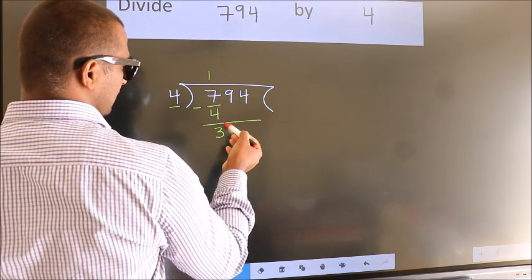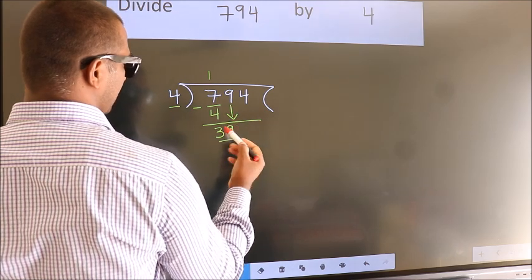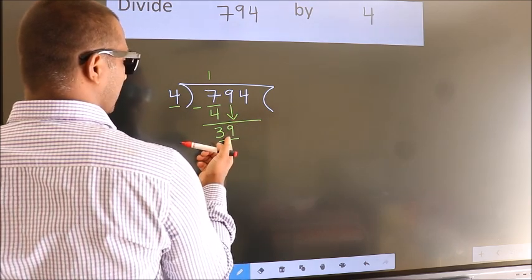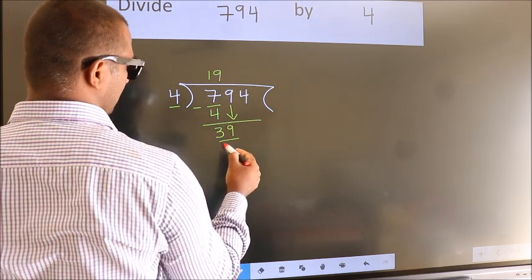After this, bring down the beside number. So, 9 down. So, 39. A number close to 39 in 4 table is 4 nines 36.